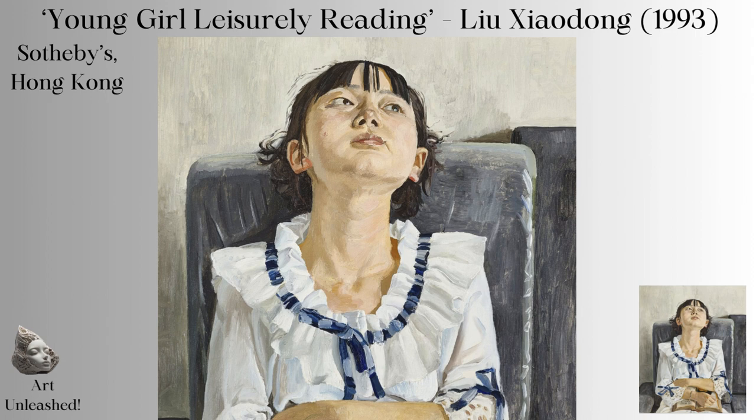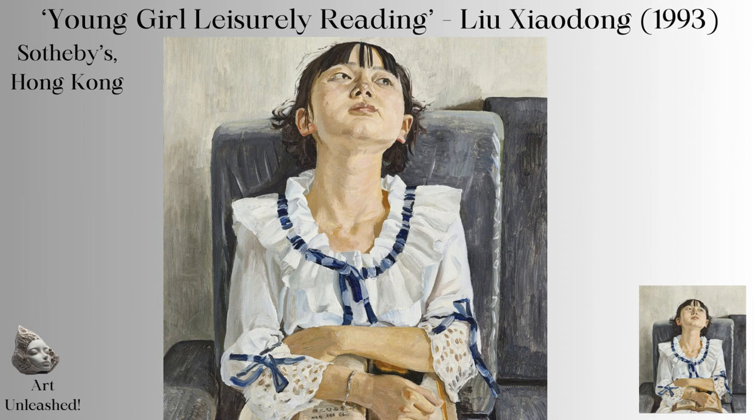In terms of light and shadow, the painting appears to be bathed in a soft, diffused light, highlighting the girl's face and hands and casting gentle shadows that give depth to the folds of her clothing and the contours of her form. There is a harmony here, a balance between light and shadow that echoes the tranquillity of the scene.